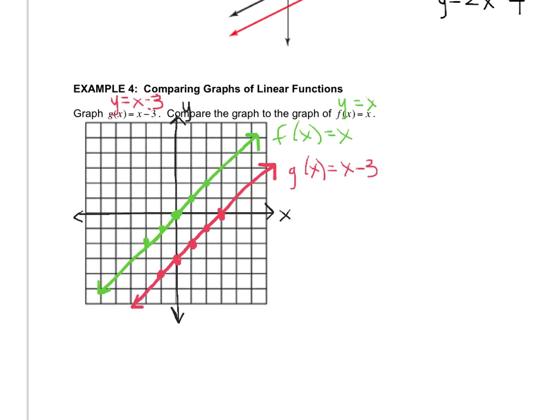Alright, so this is the graph, and now we just have to do the last thing, which is to compare the graphs. So they want us to compare this original, this red one, to the green one. So what happened?